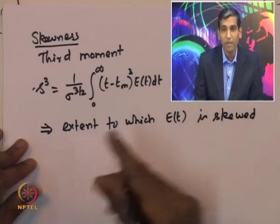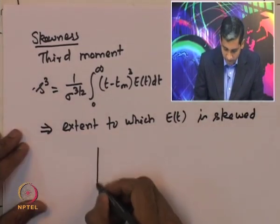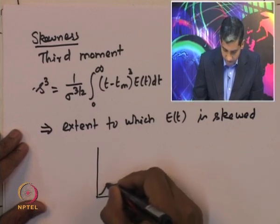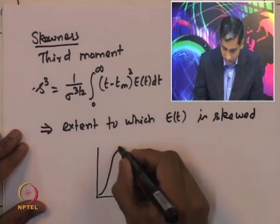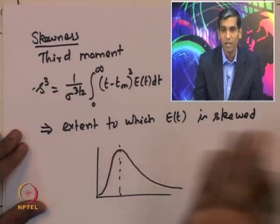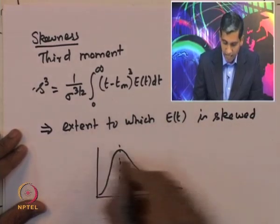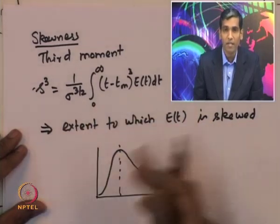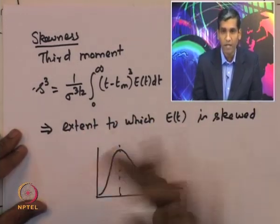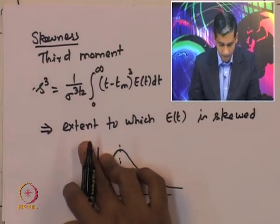The skewness s³ is given by (1/σ^(3/2)) × the integral from 0 to infinity of (t − Tm)³ · E(t) dt, where σ is the standard deviation, which is the square root of the variance. Skewness reflects the extent to which the residence time distribution function is skewed with respect to the mean — it may be skewed in either direction.